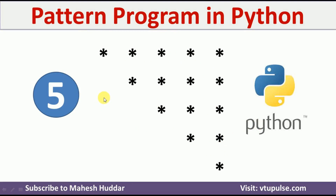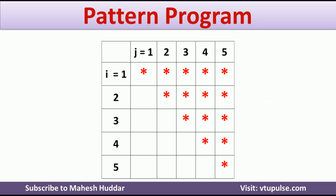Before we draw any pattern program, first we need to understand the logic to draw that particular pattern. So first I will represent this pattern in the form of rows and columns. There are 5 rows and 5 columns in this case. We need to identify the relationship between i and j so that we can come up with this particular pattern.